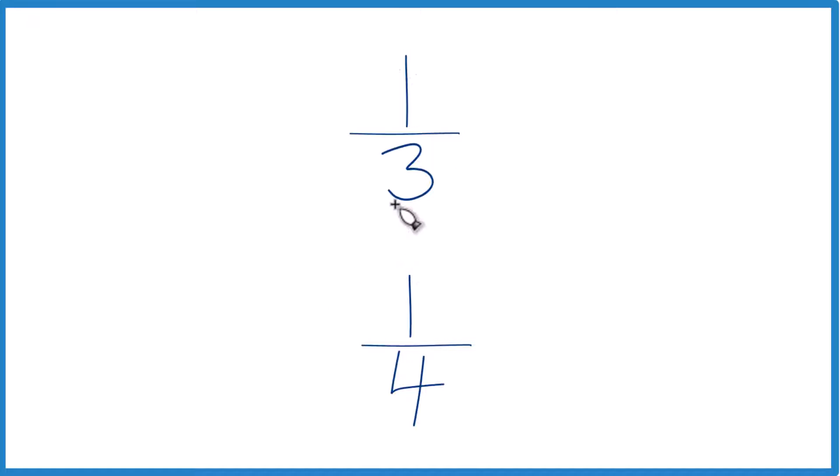So right away you can reason this out. If you had a pie and you divided your pie, your one pie, in three pieces, or you divided your one pie in four pieces, these would be smaller pieces. So one-fourth is going to be smaller than one-third.